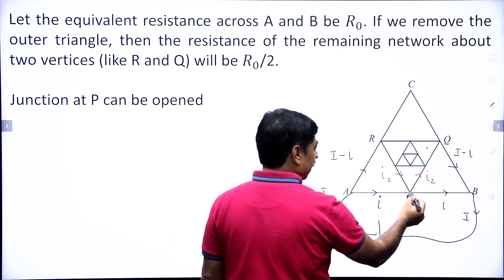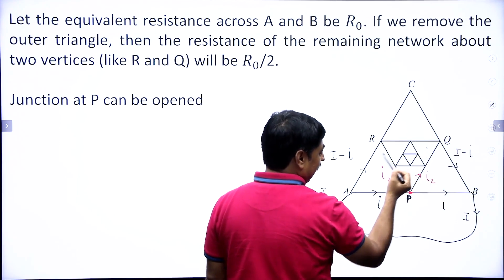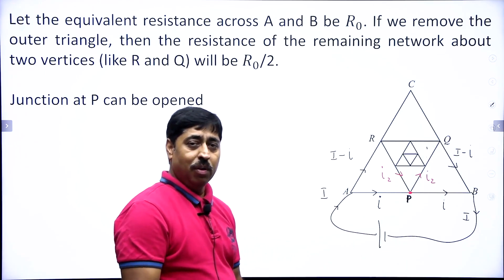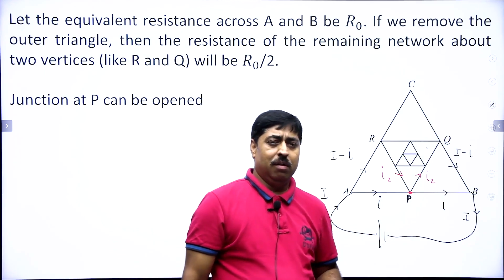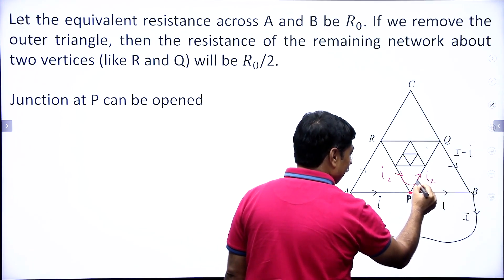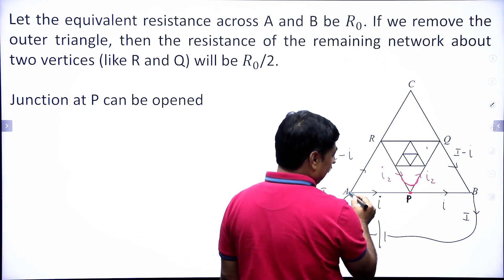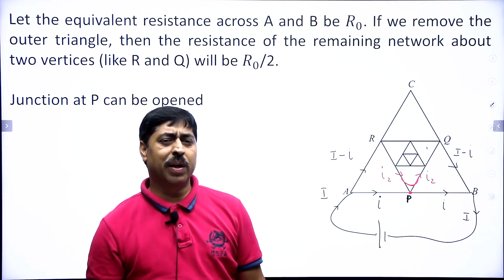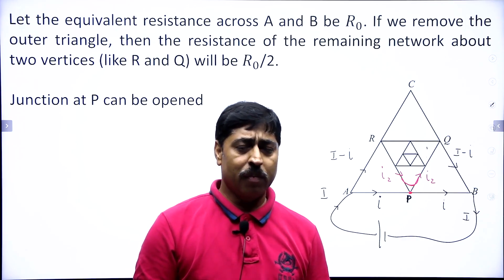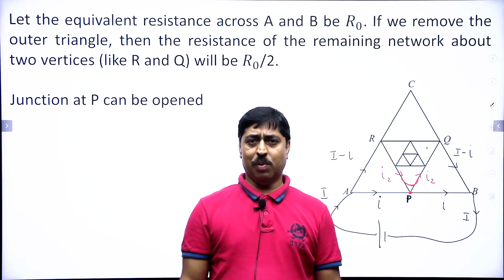Look at the junction at point P: a current I₂ flowing in is just passing straight through, and a current I flowing in is just passing straight through. So if I open this junction at point P, it makes no difference — current I₂ remains in its path and current I remains in its path. Opening that junction does not change the circuit, and this is the second important concept needed to solve this problem.